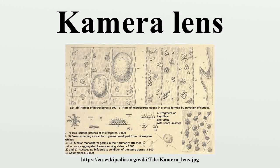Camera lens is a unicellular, flagellate organism and the only species in the genus Camera. Though the species has been known for centuries, it is poorly understood. Its systematic position within the eukaryota is uncertain.